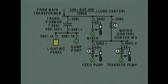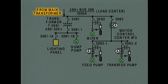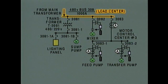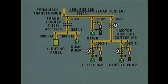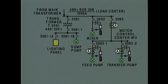Let's begin where power is supplied to the system. The main transformer reduces the voltage of the power supplied to the system, and this power is then supplied to the load center. The load center supplies power to the three individual load circuits, which in turn supply power to specific loads. Let's look at the circuits connected to the load center one at a time, starting with the first one.